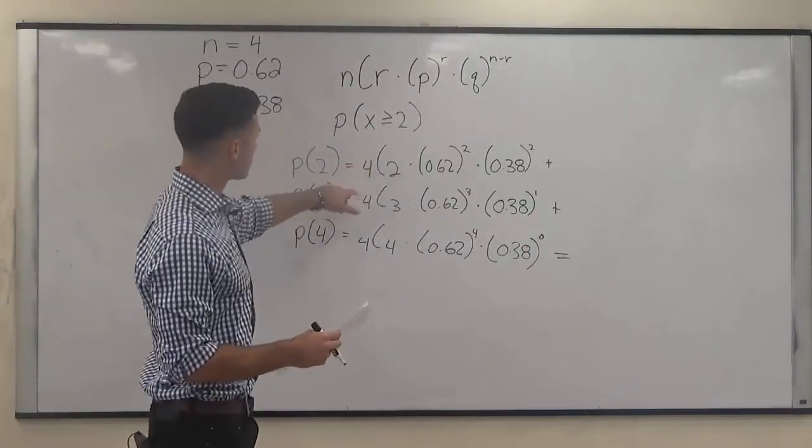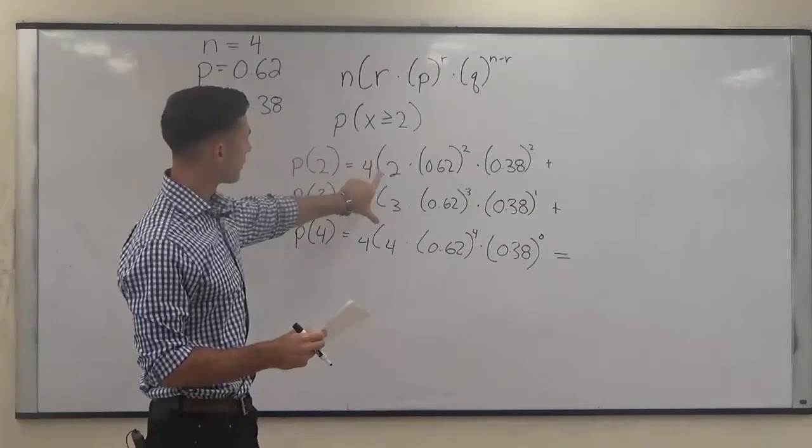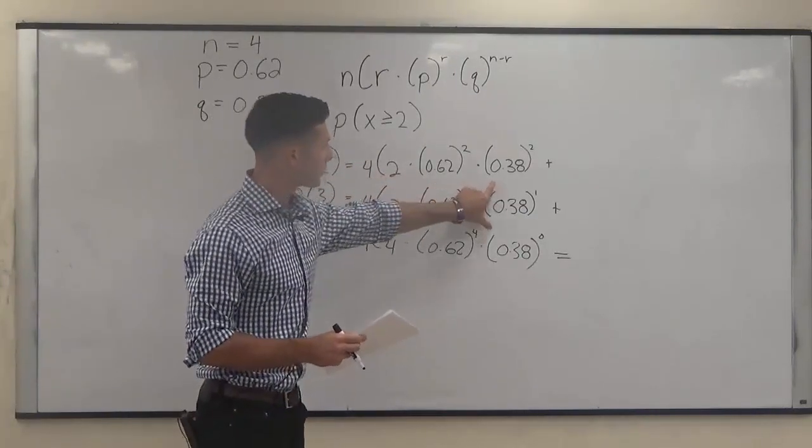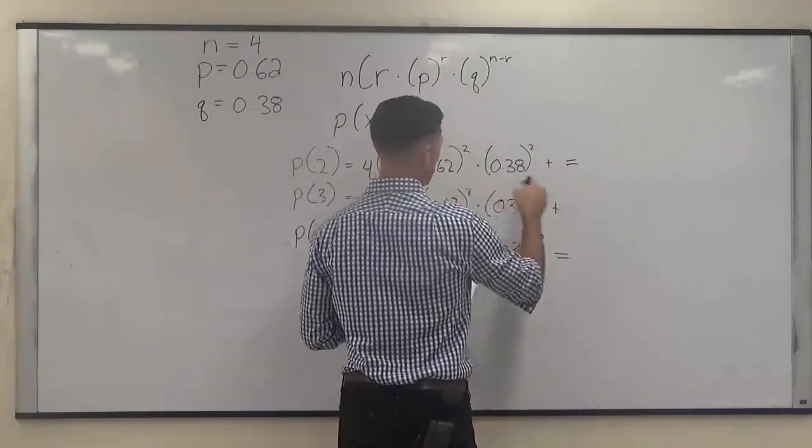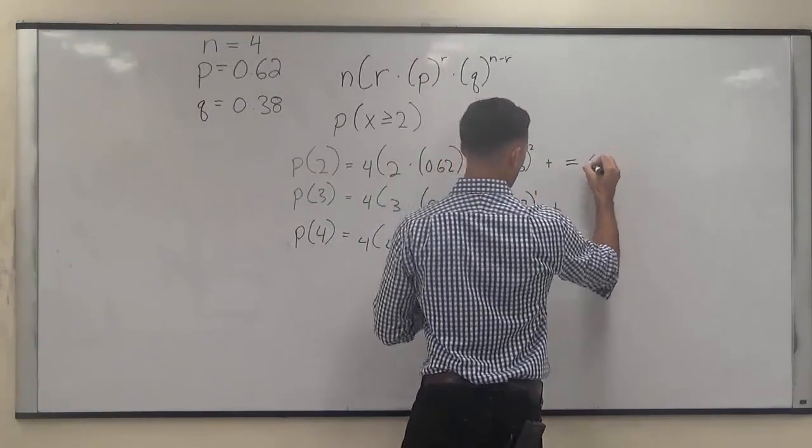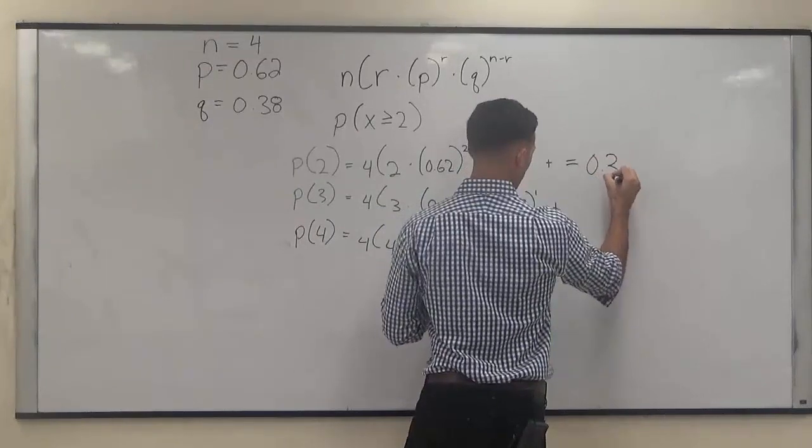So when you do the combination on your calculator and multiply it by each of these values, the probability of exactly 2 is 0.3330.